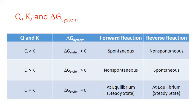It turns out that as long as the reaction quotient Q is less than the equilibrium constant K, the Gibbs free energy for the system will be negative, meaning the forward reaction will be spontaneous while the reverse reaction is non-spontaneous. We've already learned that when Q is less than K, the reaction shifts towards the products — and now we see that same relationship in terms of the change in Gibbs free energy.